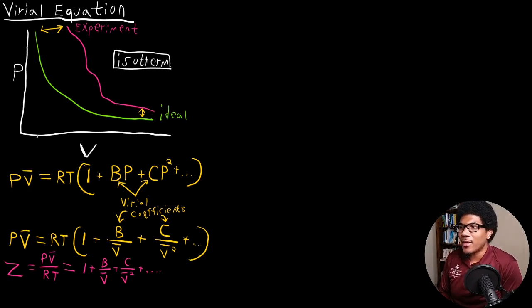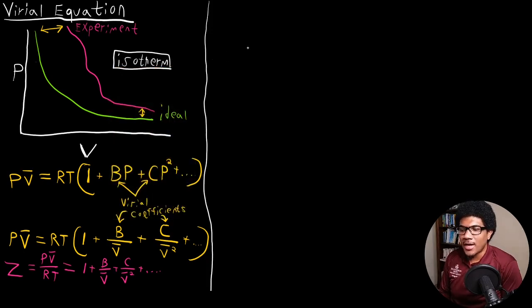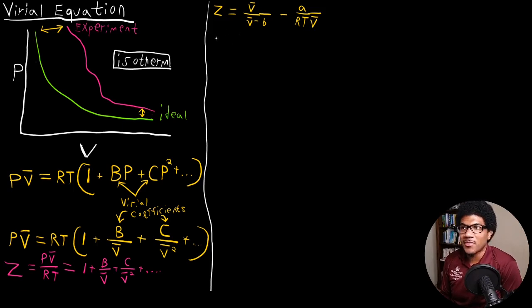So let's see what this looks like in practice. Let's take a real gas equation and do an expansion of it using this technique. Let's take our Van der Waals compression factor, which we derived in the previous video. So we have the compression factor for a Van der Waals gas: V̄ over (V̄ minus B) minus A over (RT·V̄).